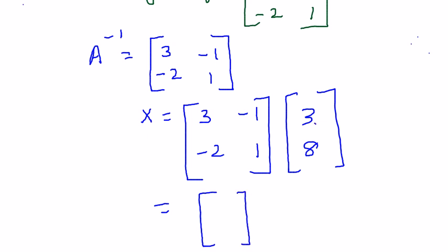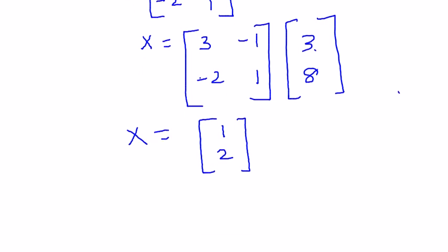Now this is very plain matrix multiplication. 3 into 3 is 9, minus 1 into 8, so 9 minus 8 equals 1. The next row is minus 2 into 3 is minus 6 plus 8, which is 2. Therefore we get X equals 1 and 2.